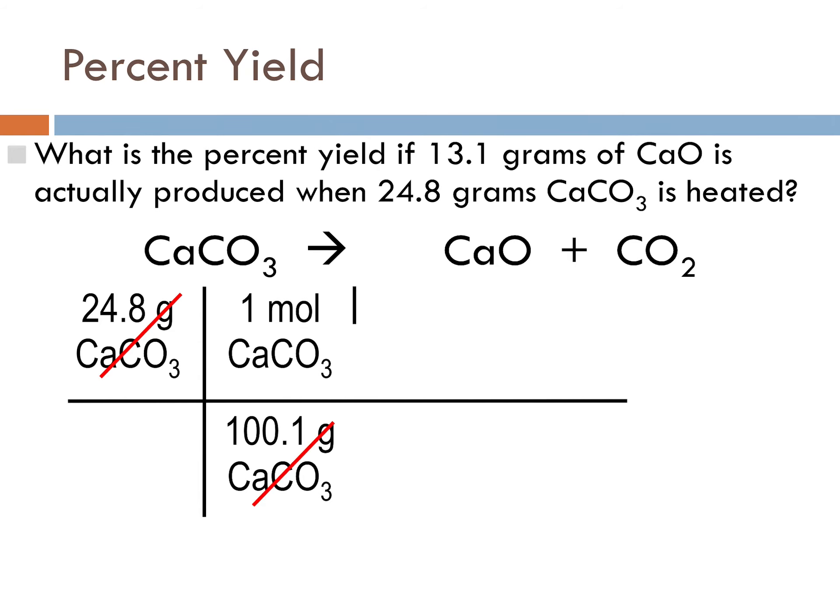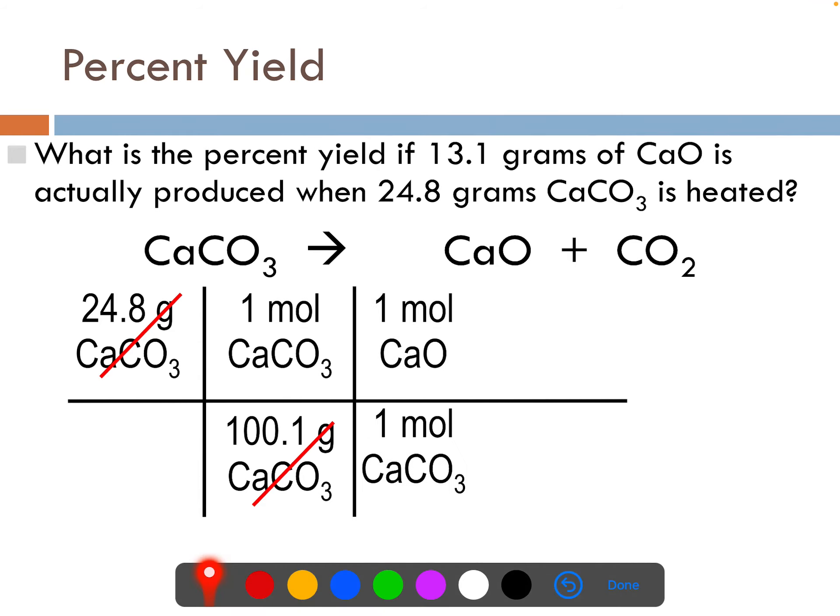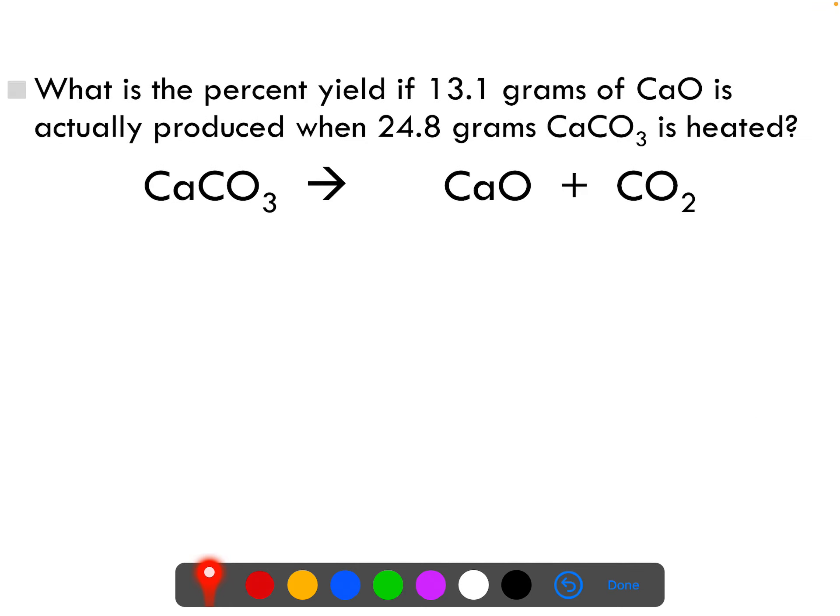Convert that to moles, moles to moles, make sure everything cancels, moles into grams, and what you end up with is that theoretically you should make 13.9 grams of calcium oxide. However, it told me up here that 13.1 grams are what are actually produced. So now let's go ahead and use that percent yield equation.